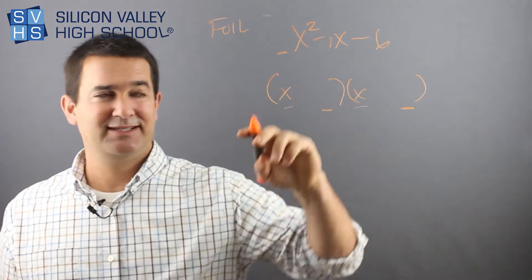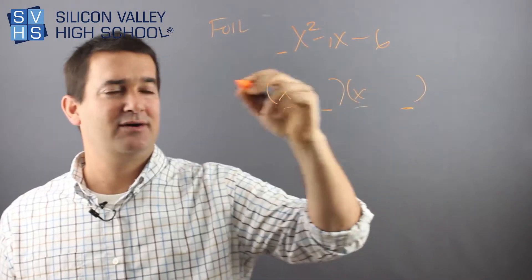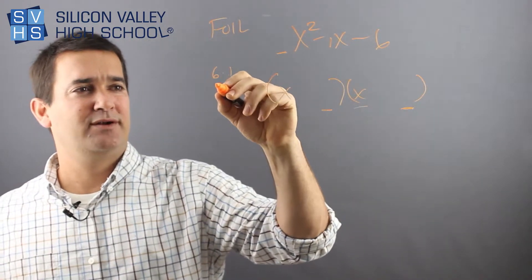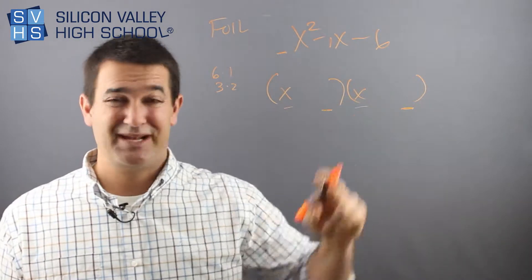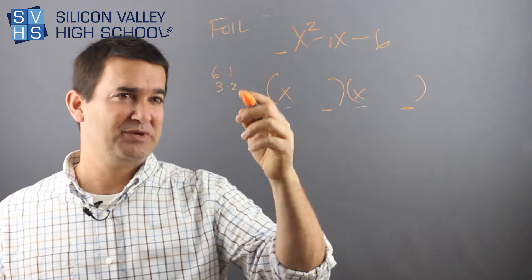The way I recommend doing this is I start with the factors of 6 and write them off to the side. It could either be 6 and 1 or 3 and 2, and that's pretty much it. Sometimes the number is really big and this is annoying because there's a million factors, but in this case it's pretty straightforward.